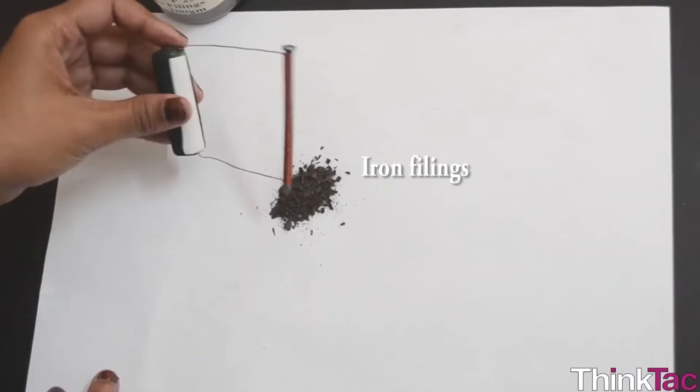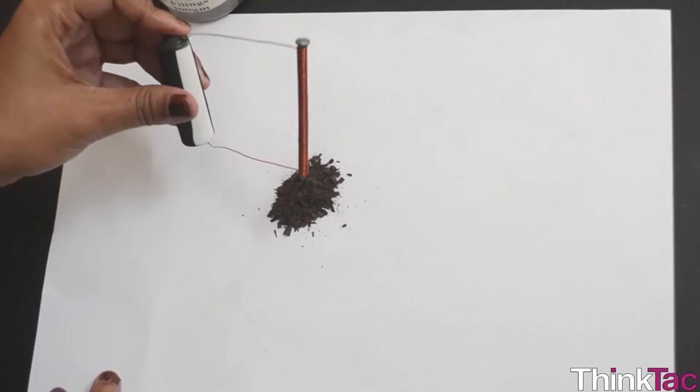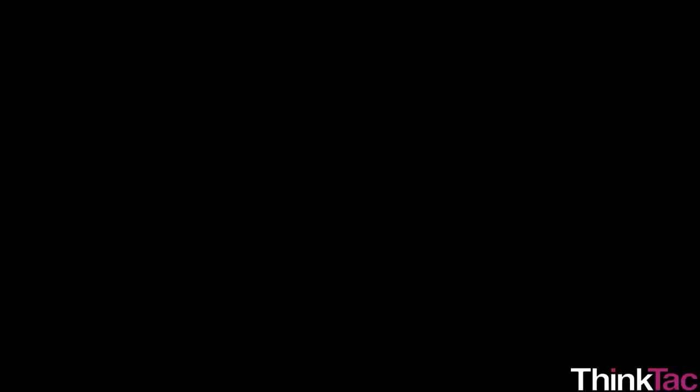Hence, current flowing through any conductor automatically converts that piece of metal into a magnet. This is what is demonstrated in a motor.